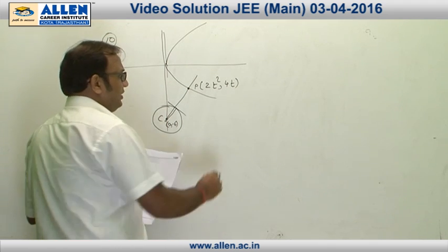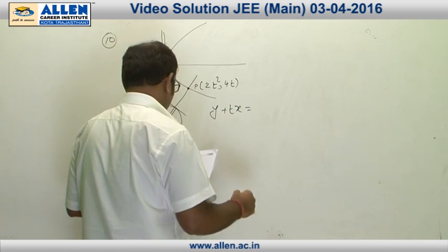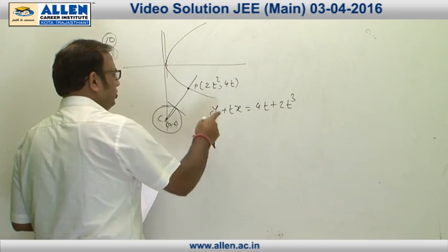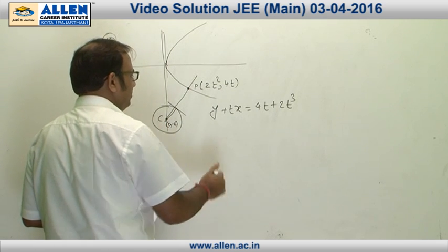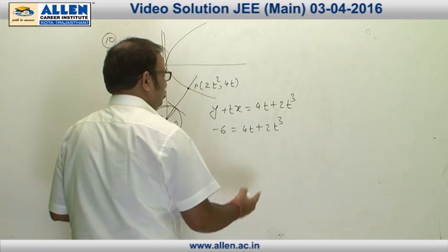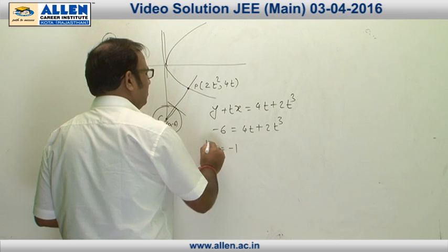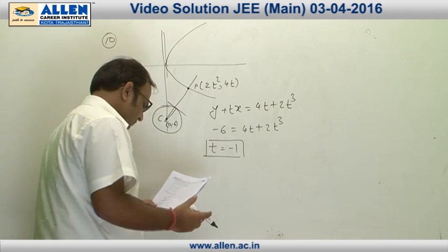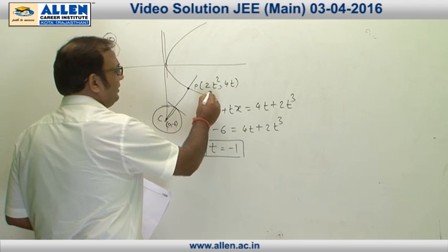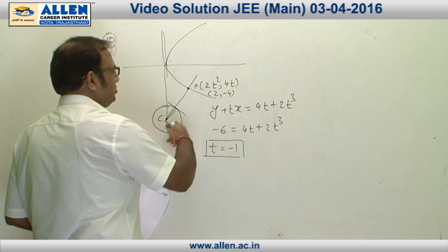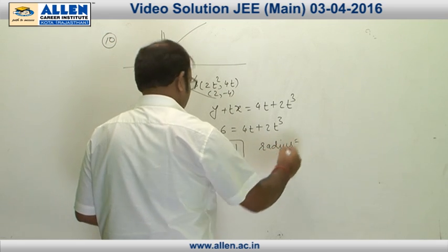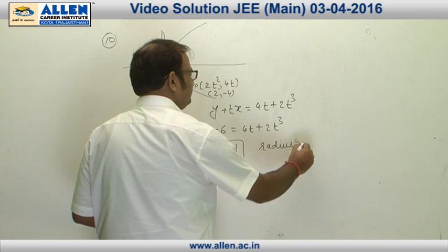The equation of the normal is y + tx = 4t + 2t³. Substituting the center (0, -6): -6 = 4t + 2t³, so t = -1 is a root. Factorizing confirms no other real root. Putting t = -1, the coordinates of P are (2, -4).